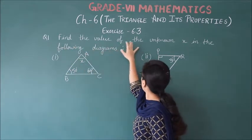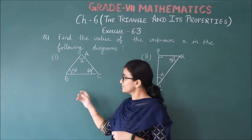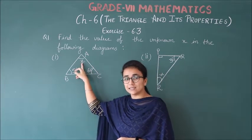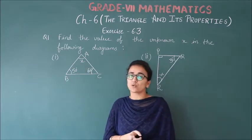Find the value of the unknown x in the following diagrams. This diagram has given one angle unknown i.e. x. We have found its value in the first exercise 6.2.